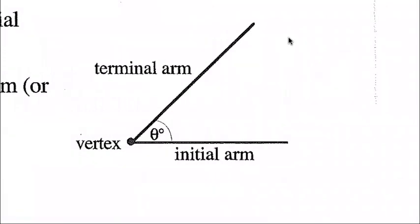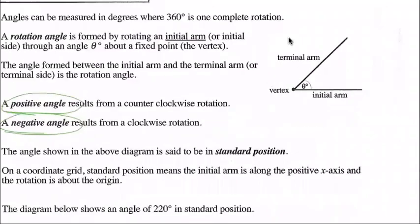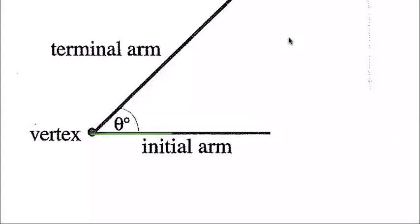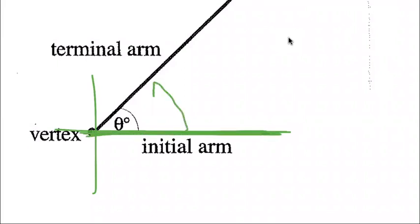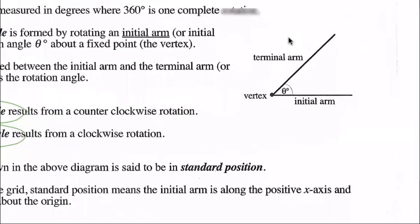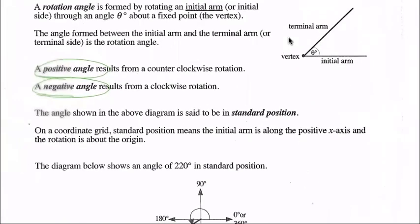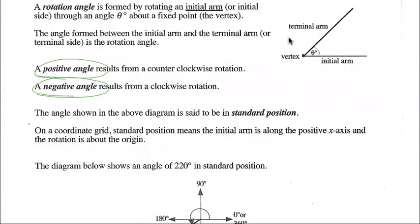This angle is shown to be in standard position. Standard position means you start on the right-hand side of the y-axis, right on the x-axis line, and count counterclockwise. On a coordinate grid, standard position means the initial arm is along the positive x-axis and the rotation is about the origin — that would be (0, 0).